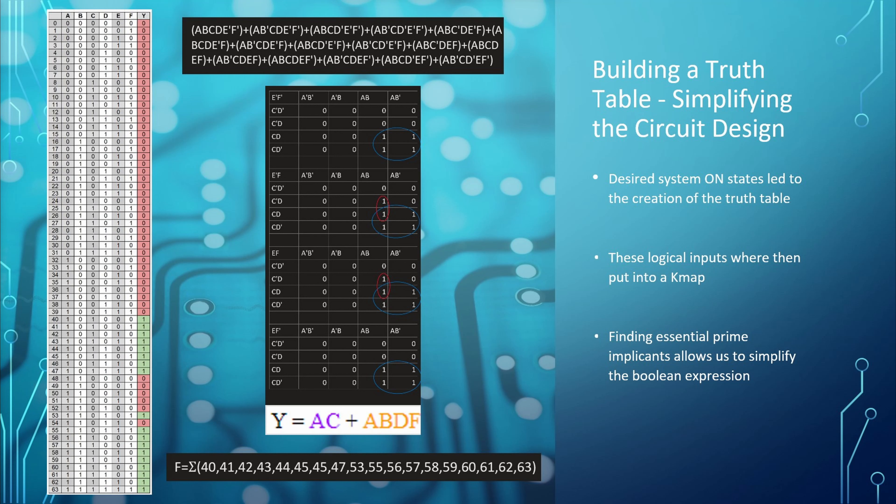After establishing the design idea and thinking through the necessary hardware inputs, we were then able to start to form a truth table. Specific input combinations result in the system on-state, shown in green, under column Y, in the far-left graphic. After the truth table was completed, we have a full set of minterms, which have been strung together in SOP form, shown at the top of the slide. You can also see the list of minterms in numeric form at the bottom of the slide.